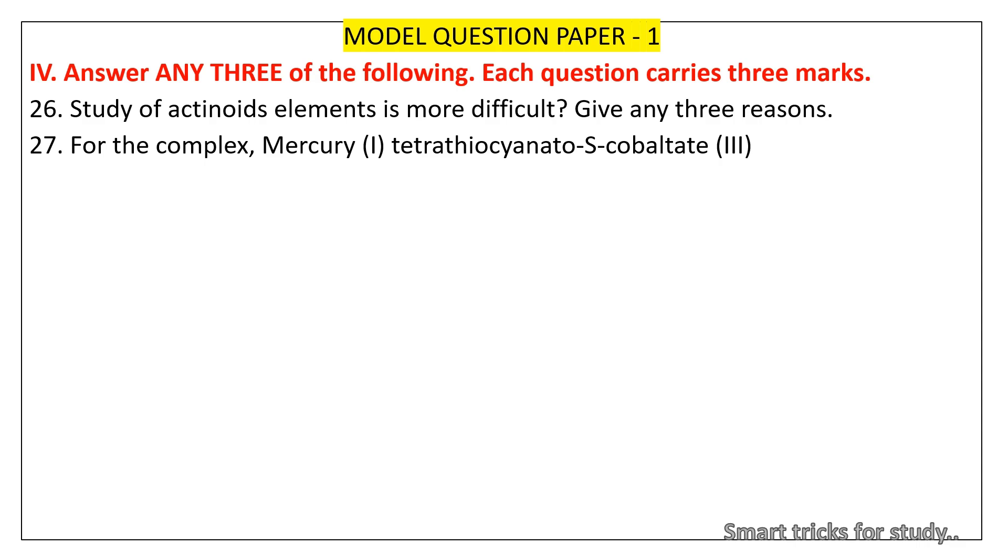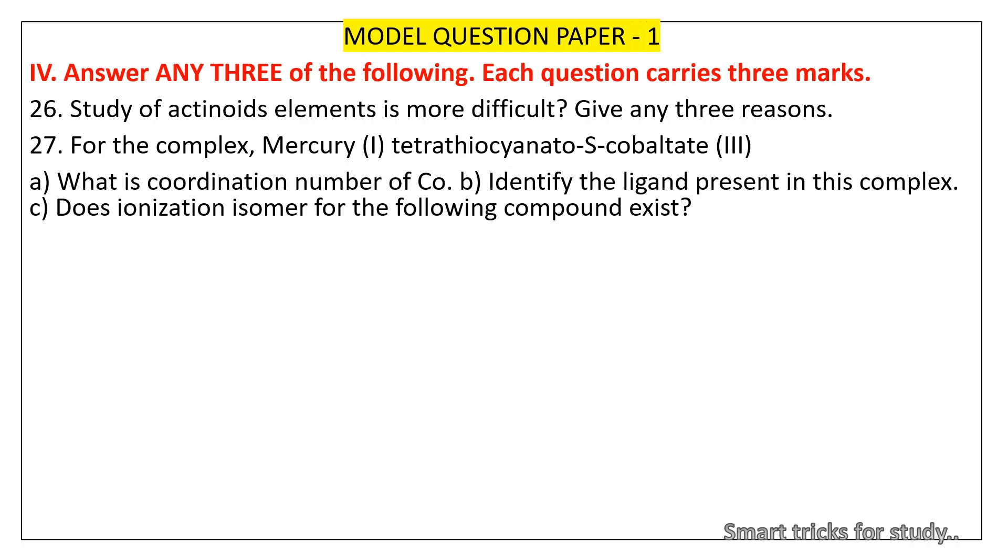27. For the complex, Mercury (I) Tetrathiocyanatocobaltate (III): A. What is coordination number of Co? B. Identify the ligand present in this complex. C. Does ionization isomer for the following compound exist?